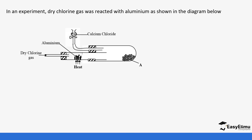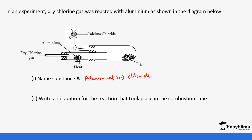Let's do one practice question to conclude the session. In an experiment, dry chlorine gas was reacted with aluminium as shown in the diagram — showing chlorine, aluminium, and calcium chloride. Substance A is aluminium trichloride. The equation for the reaction in the combustion tube is: 2Al(s) + 3Cl₂(g) → 2AlCl₃. That's it for this session — see you in the next lesson as we look at other properties of chlorine.